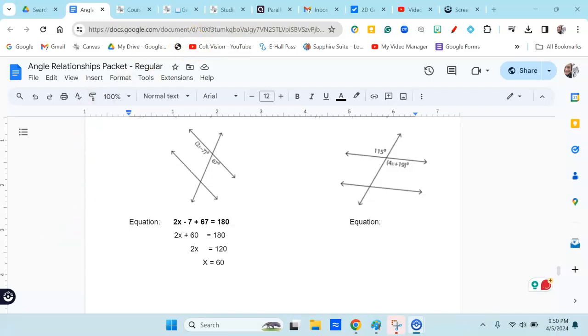So if x equals 60, then when I substitute that back in here, I would do 2 times 60, which is 120, and then I'm going to subtract 7 because it's 2x minus 7. And then that would give me 113. And if this obtuse angle is 113, 113 plus 67 is 180, so that's the right answer. The missing angle here is 113.